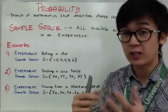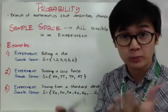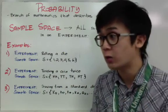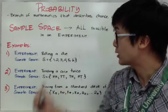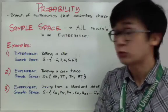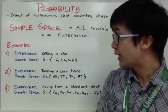There are six dots on a die, so the sample space is one, two, three, four, five, six. The second experiment we have is tossing a coin — but in this case, we're not just tossing one coin. We're tossing a coin twice.